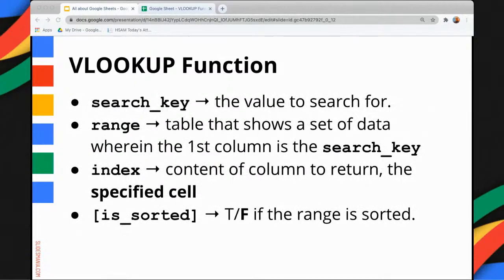Let me explain further. Search key is the value to search for in a table, while the range is the table that shows a set of data wherein the first column is the search key. Index is the column number to return, while is sorted is a Boolean value — true or false — which indicates if the range is sorted or not. Usually, we use false because our table is not sorted.